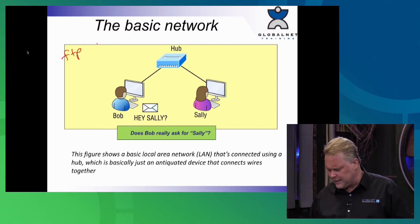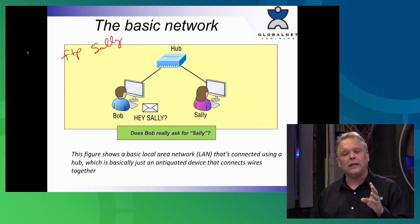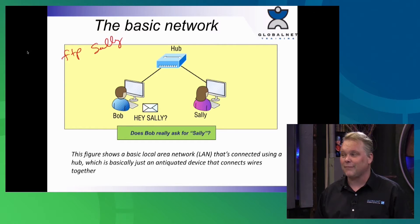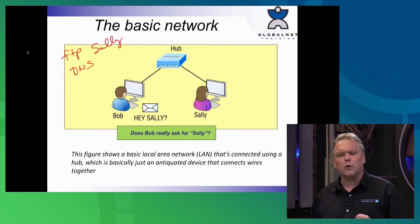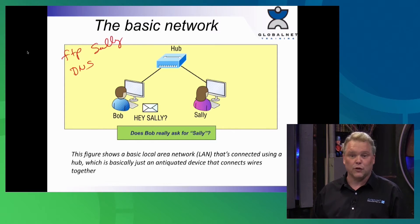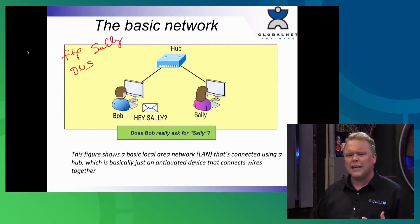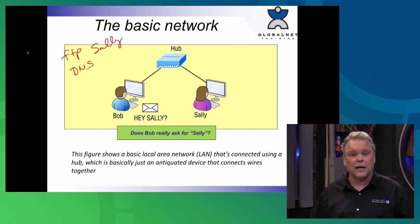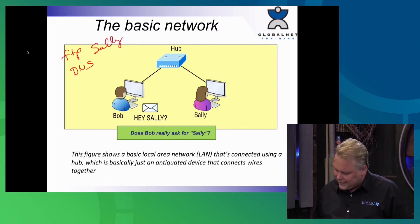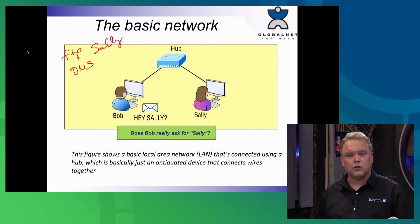Bob's host doesn't even communicate directly to Sally — it has to do something first. We normally have to do something called name resolution. DNS is pretty important. In the world where we're running mostly IPv4 today, saying something like Telnet or FTP 1.1.1.1, which is Sally's IP, isn't a big deal. But DNS becomes a much bigger deal when we get to IPv6. Also, if we didn't have DNS, we wouldn't be able to get to places on the internet because we'd have to know every IP address — that could be a little cumbersome. Nonetheless, DNS is going to resolve Sally's address to an IP address, something simple like 1.1.1.1.